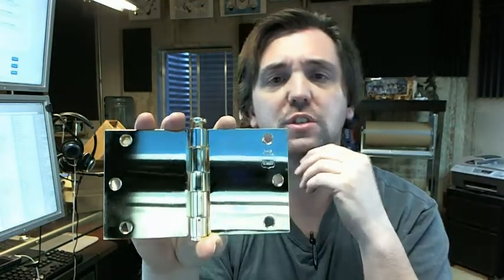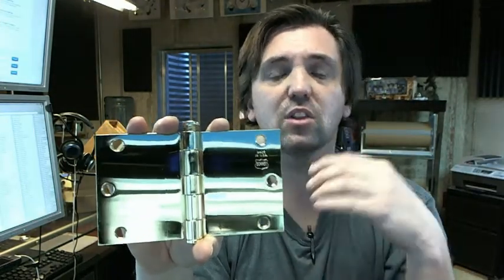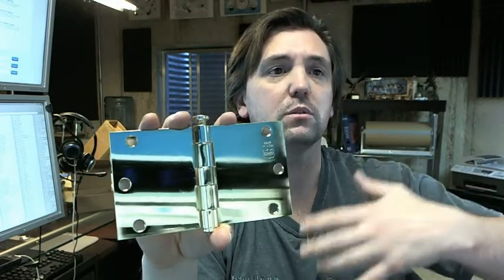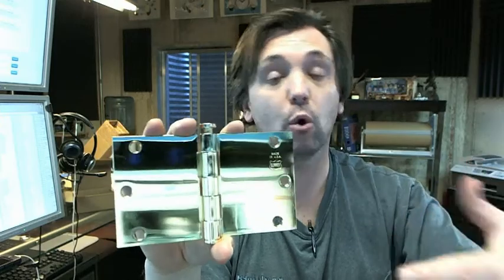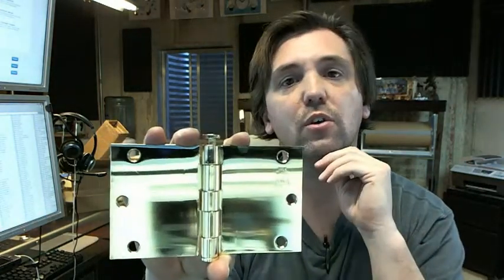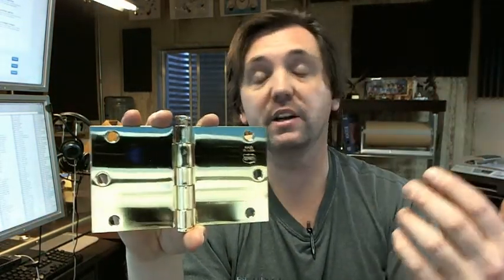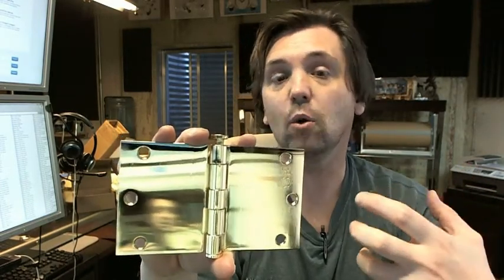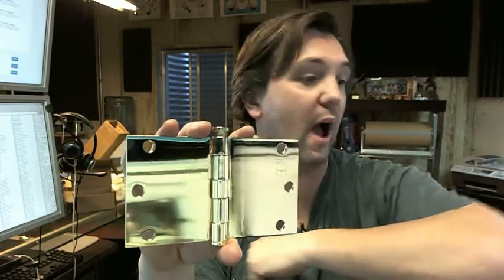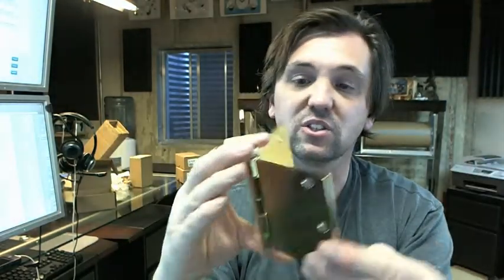A wide throw hinge is going to be used when you need to get the door out past an unusual frame or wall condition. If you had an exterior door and you had shutters applied to the outside of the wall, you might need a wide throw hinge to help get the door out past that material.